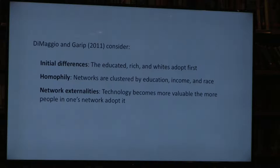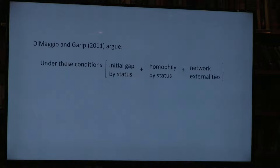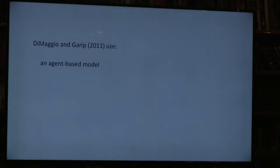If we put these three conditions together—an initial gap in adoption by status, homophily in network formation with respect to those same status characteristics, and network externalities—then social networks would exacerbate existing inequalities. In other words, we would see inequality that cannot be explained by income, education, or status differences alone. The networks would actually hurt inequality.